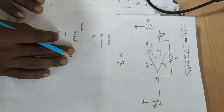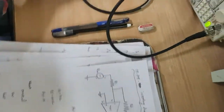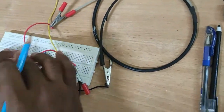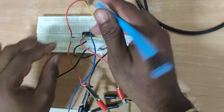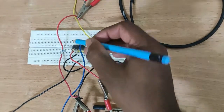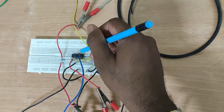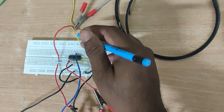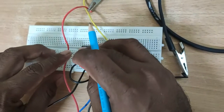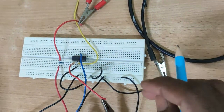In the practical, the same circuit is connected on the breadboard. The IC used is TL084, which has 4 op-amps inbuilt. We are using the first op-amp.